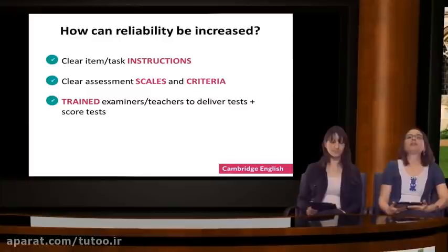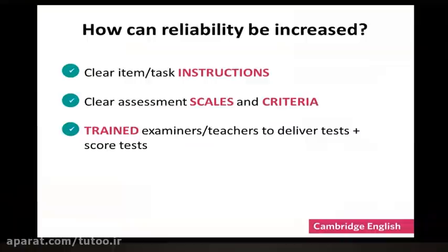Test reliability is important. Let's take a look at a few fundamental ways of increasing the reliability of your test. One way is through providing clear item or task instructions. Because if the instructions are clear, the task will produce the kind of language you expect, and it will make it easier to mark. The markers will be more consistent in marking because they know what to expect. Clear assessment criteria is another way of increasing reliability. Because if your raters know what they need to focus on when marking, they'll have high levels of agreement.